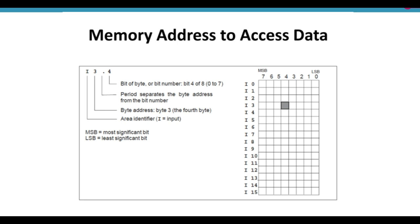If you want to address this bit 4, then its address will be I3.4, meaning byte number 3 and bit number 4. It can be written in this way: I3.4. I is the area identifier for the PLC input, 3 is the byte address, and 4 is the bit number.